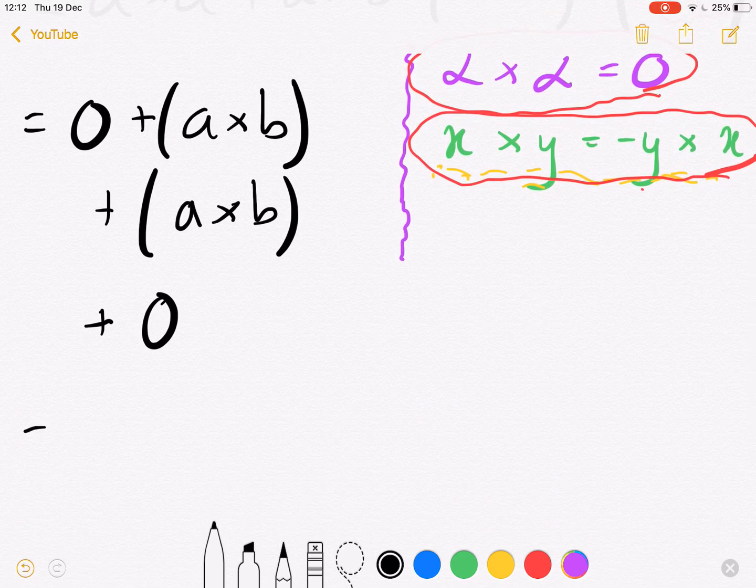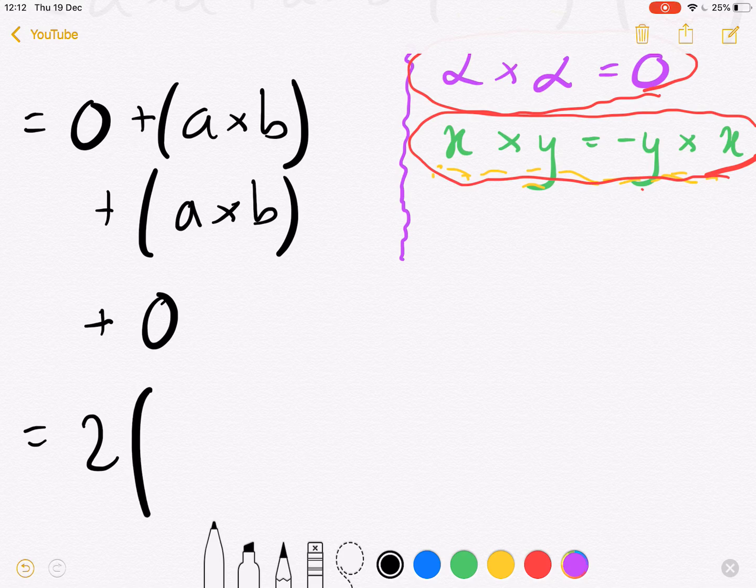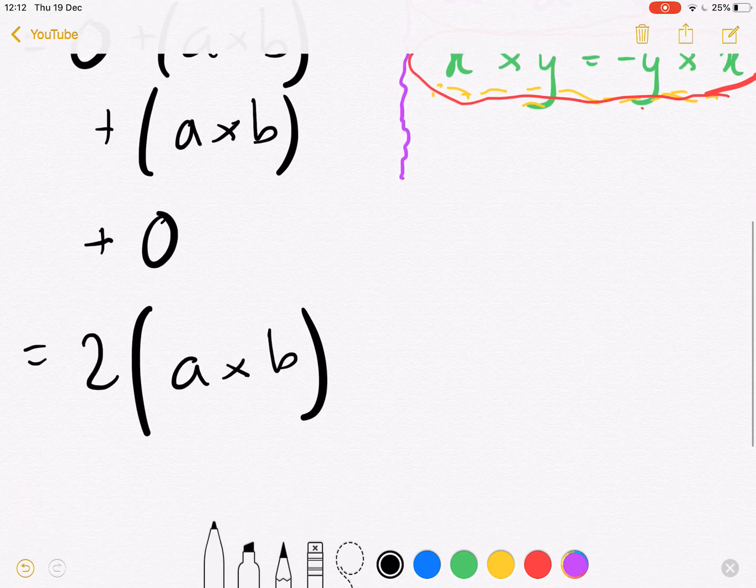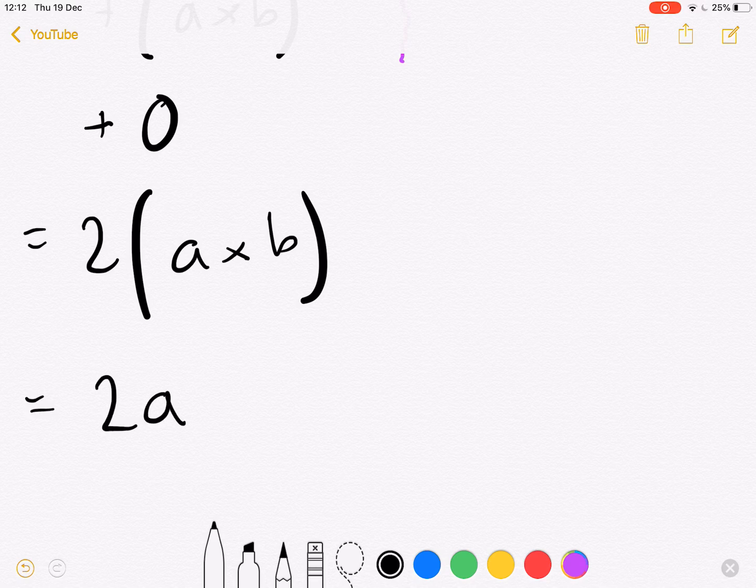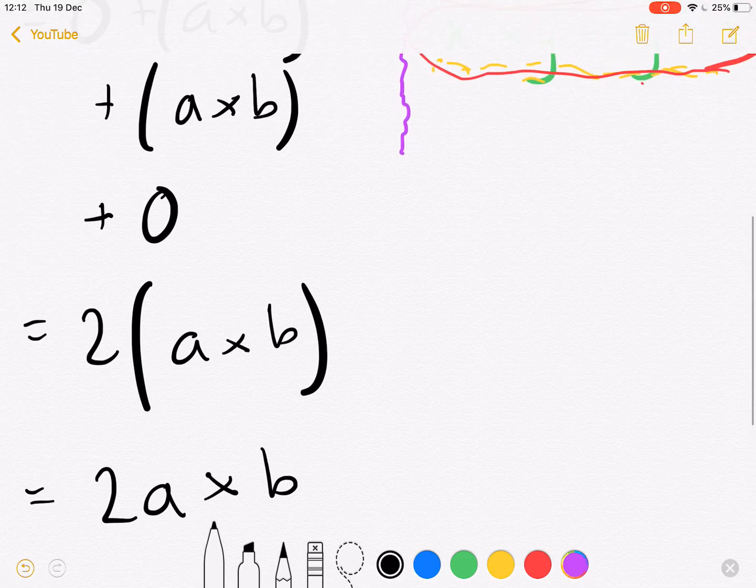Now what do we get? This is equivalent to 2a × b, and we can simply write this as 2a × b. And there is your final answer.